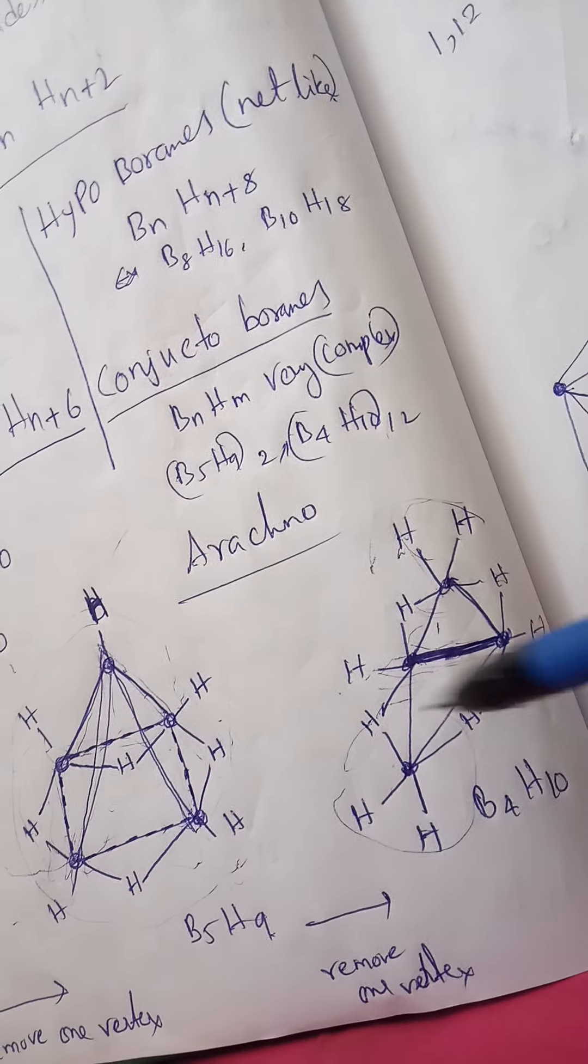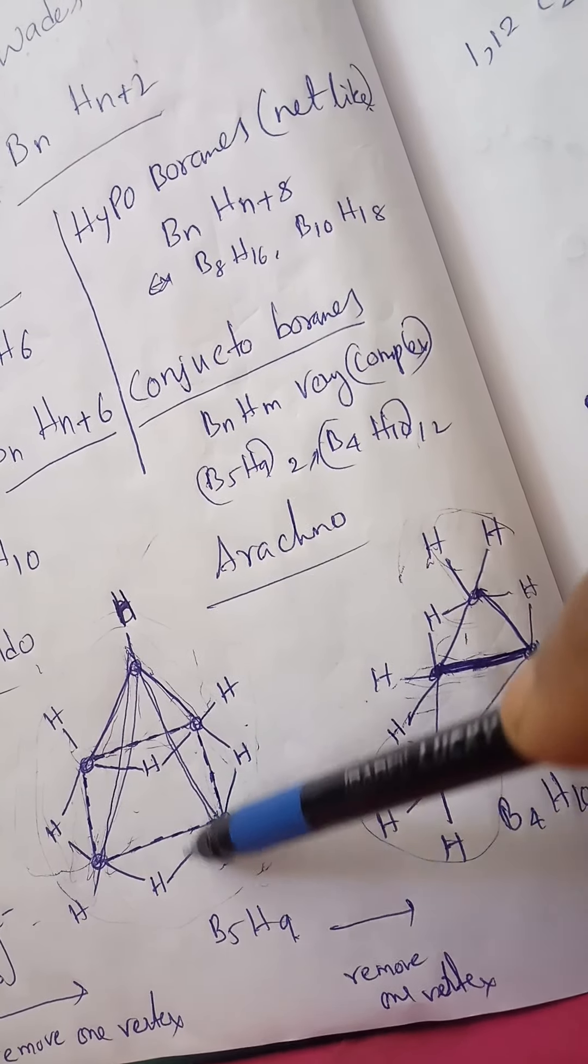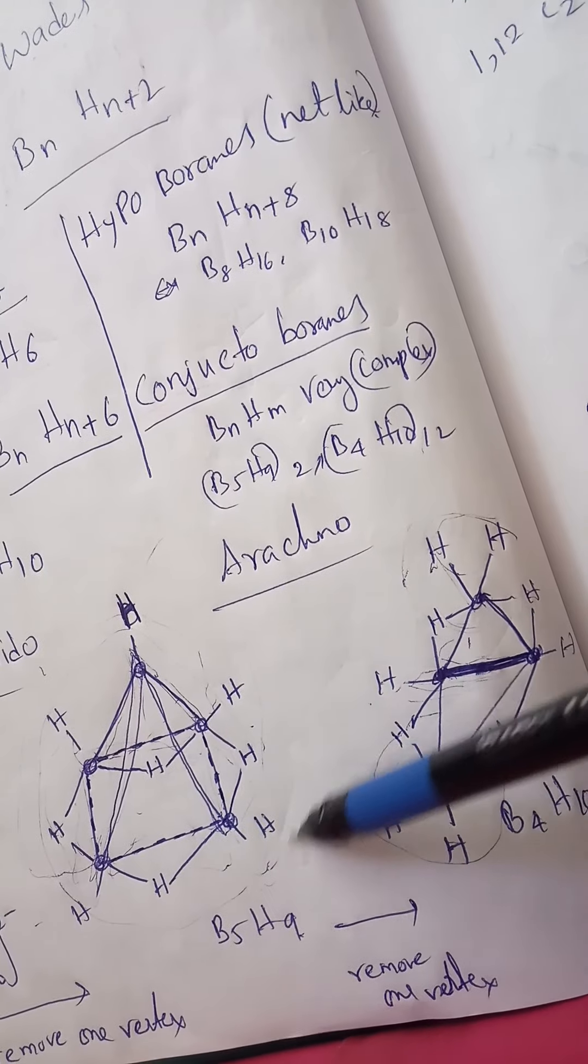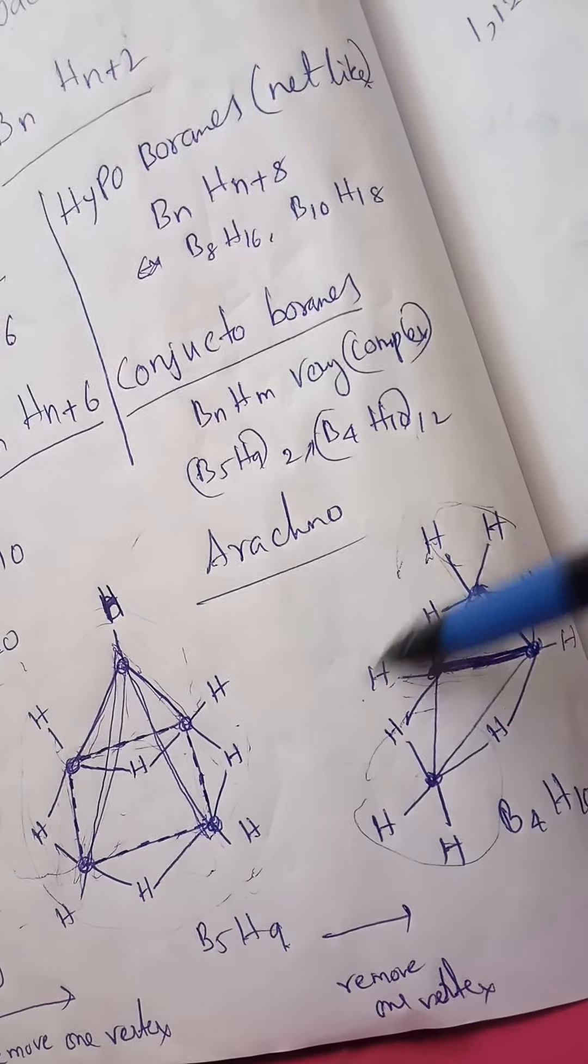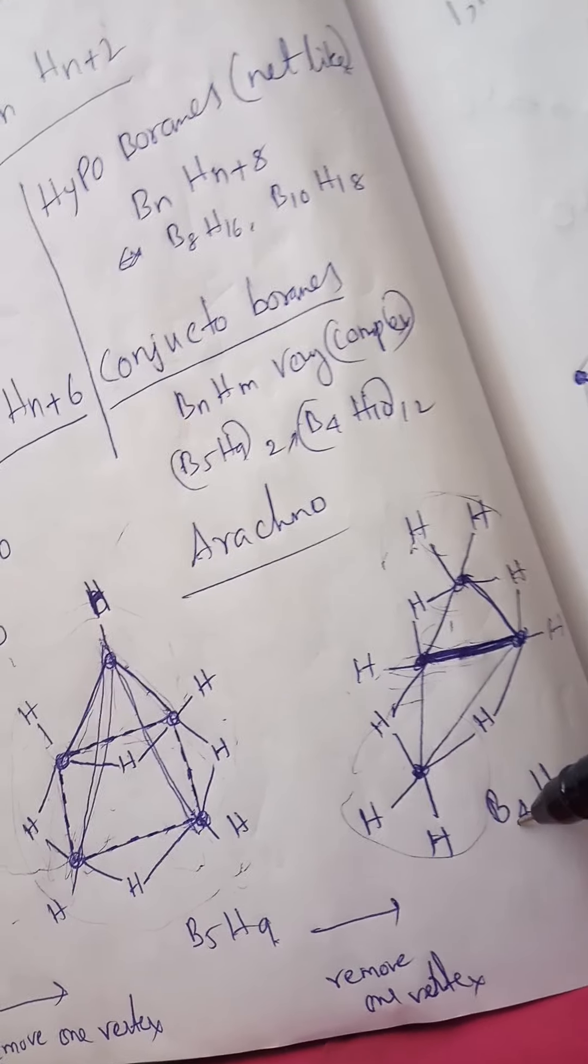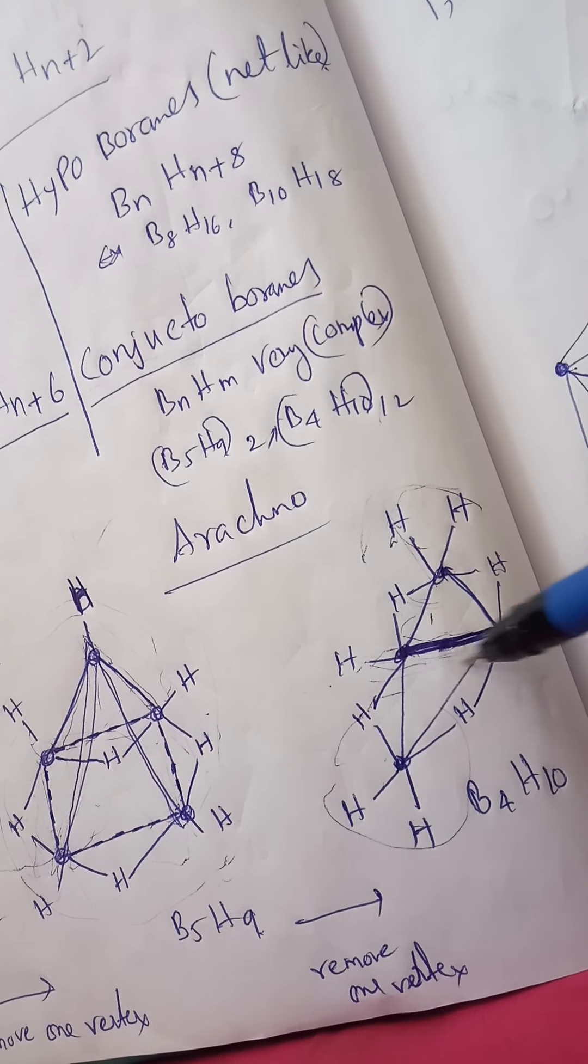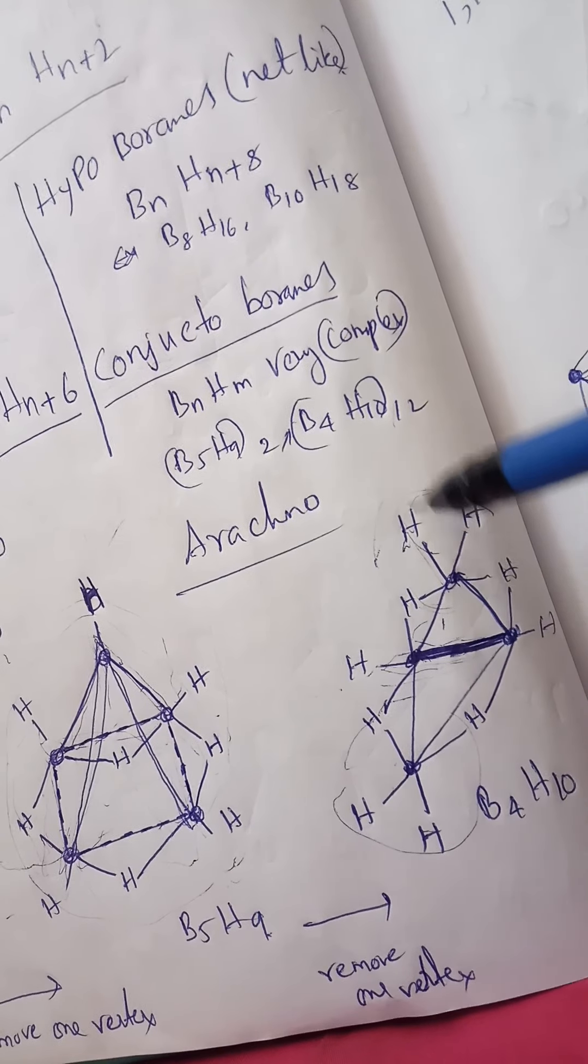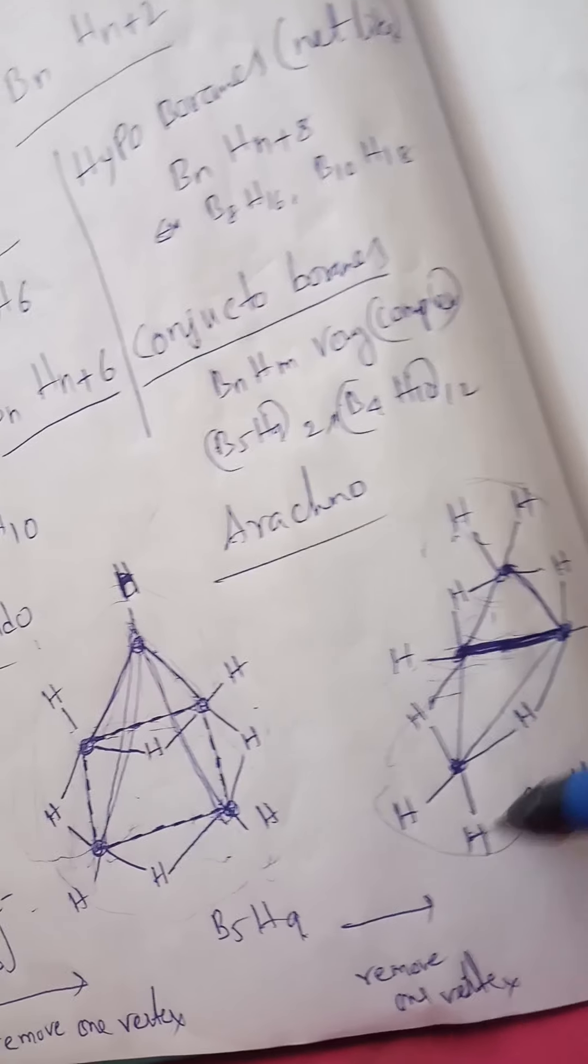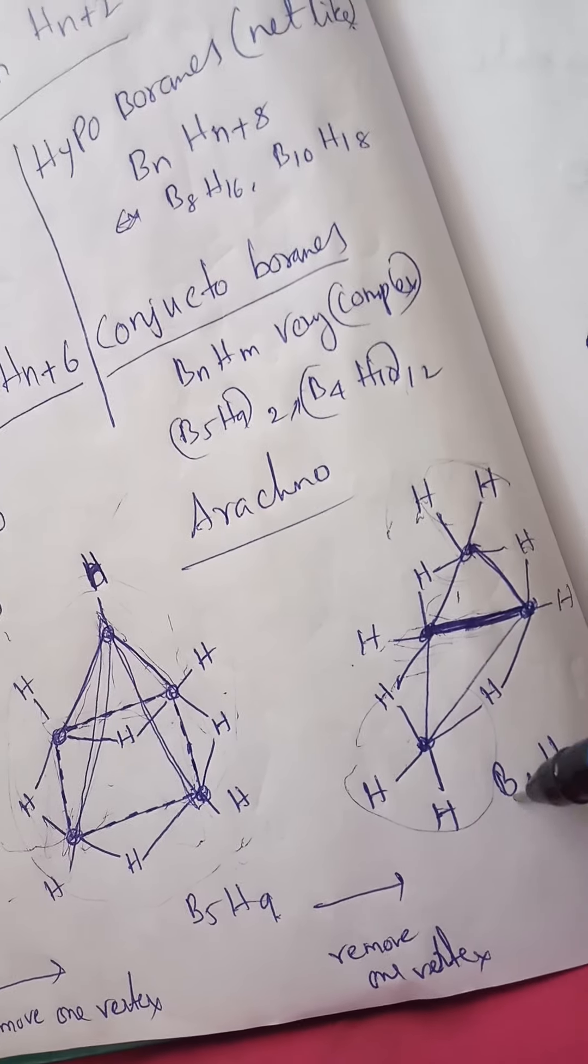Arachno-borane: we remove another vertex of the nido-borane, or remove two vertices from the closo-borane. In tetraborane, we have a direct BB bond with one terminal hydrogen only, no BB bond. We have two hydrogens, BH2 unit here and BH unit. This is arachno-borane, the tetraborane formula.